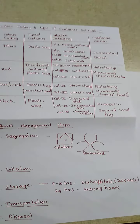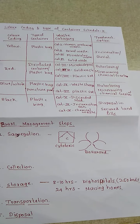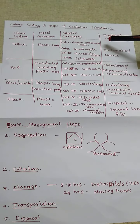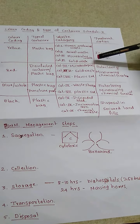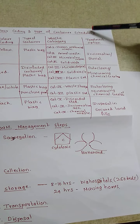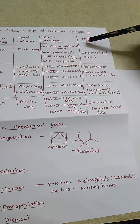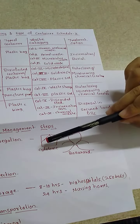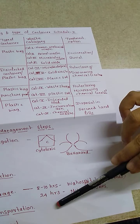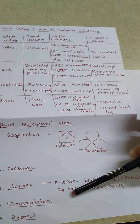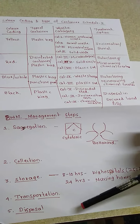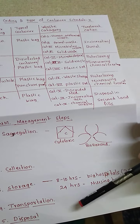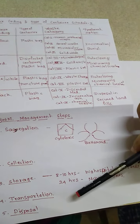In today's class we covered the biomedical rules schedule 1, and we saw the various color codings of containers along with the categories — that is schedule 2 — according to the solid waste management rules 1998. We also covered the biomedical waste management steps: segregation, collection, storage, and transportation, along with the various personal protective equipment, and an overview of the different disposal and treatment techniques.